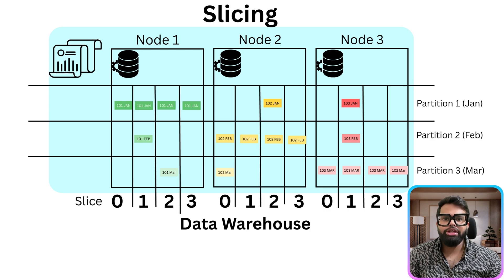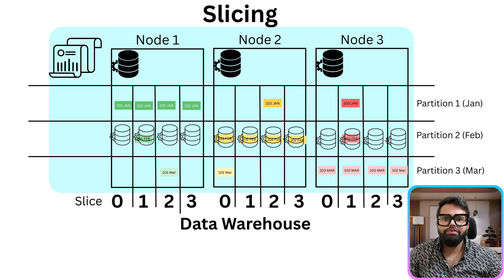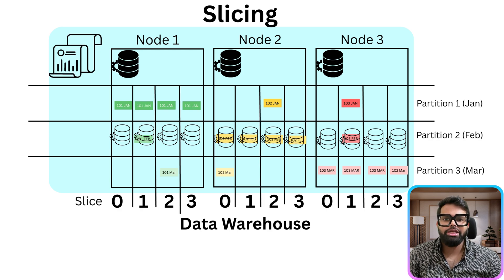With 3 nodes and 4 slices per node, you have a total of 12 slices working in parallel — that means up to 12 parallel processing units during both data ingestion and query execution. This is the secret sauce behind the speed and scalability of modern data warehouses: more slices, more power, and massively parallel processing at every stage.